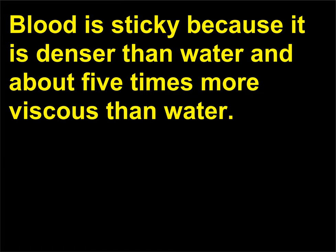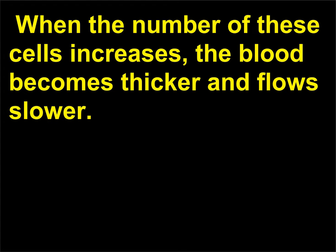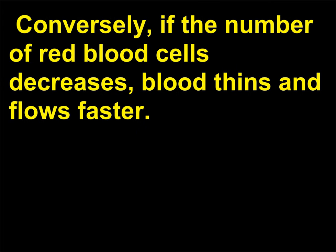Why is blood sticky? Blood is sticky because it is denser than water and about five times more viscous than water. Blood is viscous mainly due to the red blood cells. When the number of these cells increases, the blood becomes thicker and flows slower; conversely, if the number of red blood cells decreases, blood thins and flows faster.